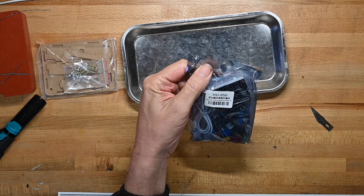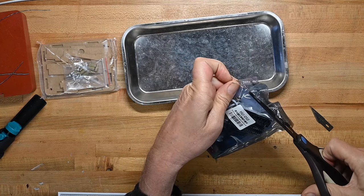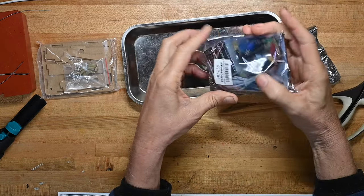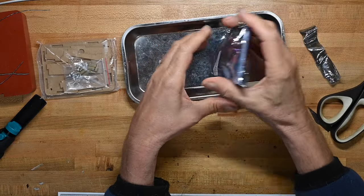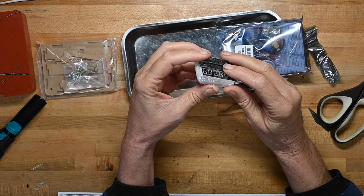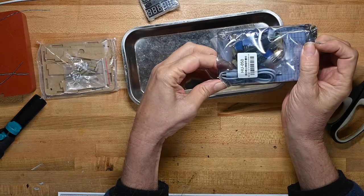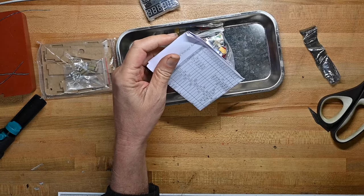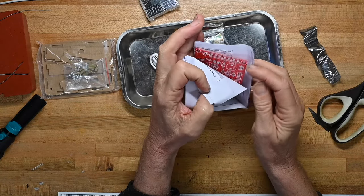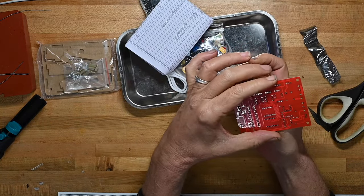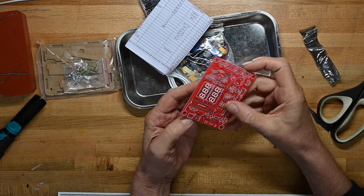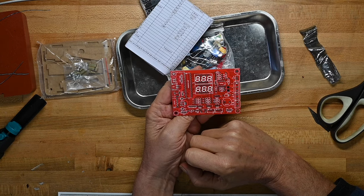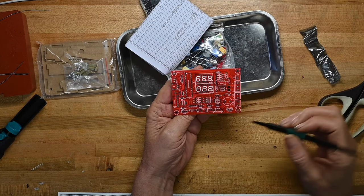Multi-function instrument production kit is what the label on this bag says. I'm going to dump everything out. It's a good-looking circuit board. It's all through-hole plated, which is not typical for inexpensive kits like this. So let's see what we've got.